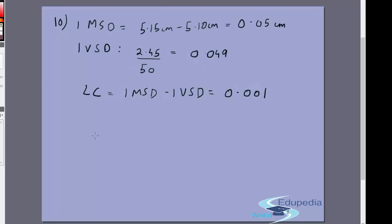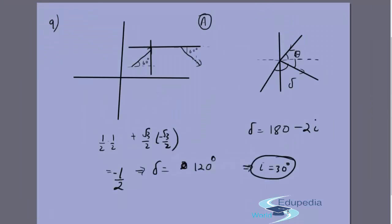Finally we can just apply the formula to get the answer. The reading is the main scale reading plus number of divisions multiplied by the least count. So 5.10 is the main scale reading plus 24 multiplied by 0.001 which is the least count, which equals 5.124, and the answer is B. This completes the solutions, thank you.